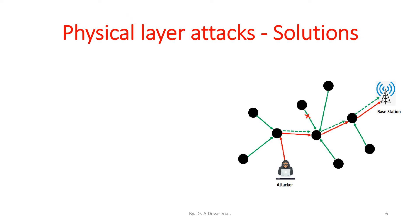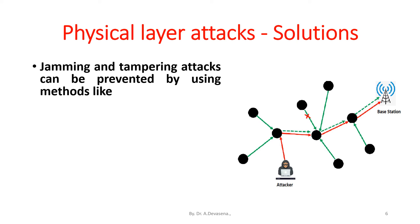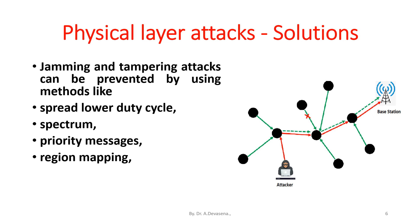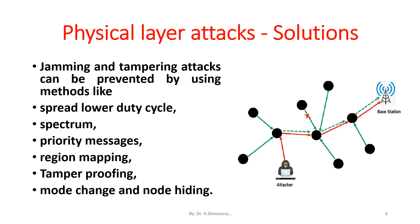The solution for the physical layer attacks. Jamming and tampering attacks can be prevented by using methods like spread spectrum, lower duty cycle, priority messages, region mapping, tamper proofing, mode change, and node hiding.